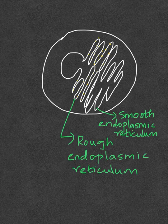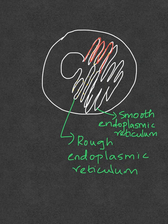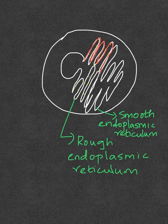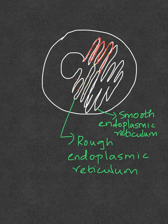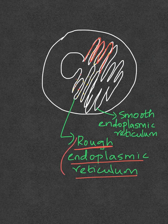Attached to the nucleus is a series of maze-like structures known as the endoplasmic reticulum, and there are two types. The endoplasmic reticulum that is very close to the nucleus contains ribosomes on it. These ribosomes look like granular structures on microscopy, and so this endoplasmic reticulum is also known as rough or granular endoplasmic reticulum. It mainly has a role in protein synthesis.